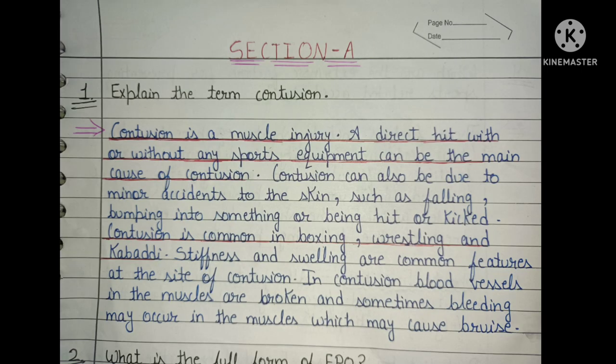We start with Section A. Question one: explain the term contusion. Contusion is a muscle injury. A direct hit with or without any sports equipment can be the main cause of contusion. Contusion can also be due to minor accidents to the skin, such as falling, bumping into something, or being hit or kicked.